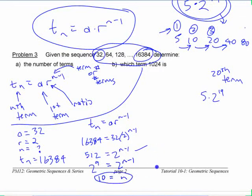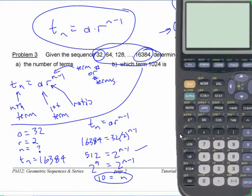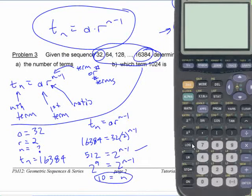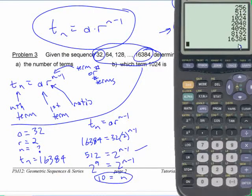So it's the 10th term. You can also verify this quickly on your calculator — go to a blank screen and put 32, then keep multiplying by 2: that gives the 2nd term, 3rd, 4th, 5th, 6th, 7th, 8th, 9th, 10th. Just to confirm you're right. You have to know how to do both things.